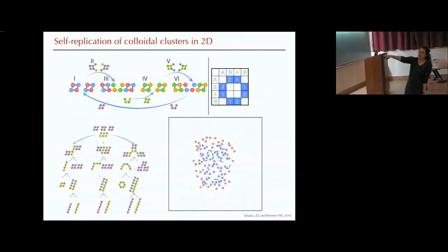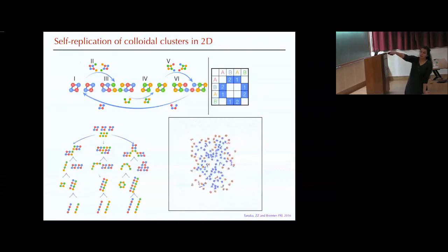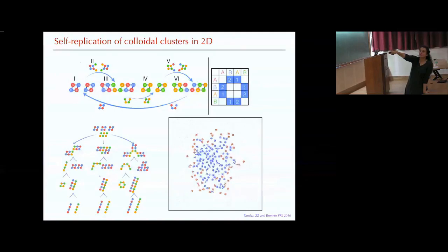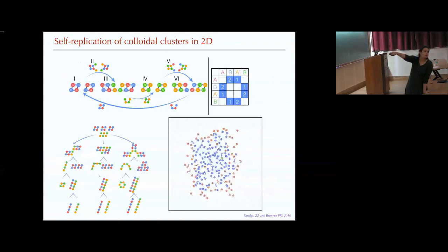Instead of just a square being copied between two parents, geometrically it's possible to add yet another particle — not four but five — and bind them between the two parents and then separate. And it's a line because the green and green don't like each other, so they cannot form a loop. They end up just forming a line that can then copy itself.